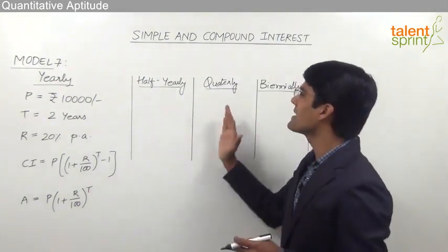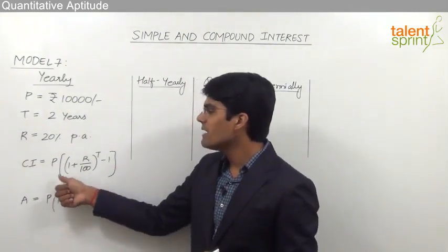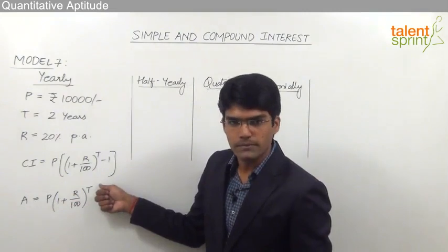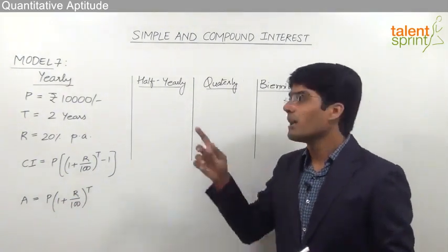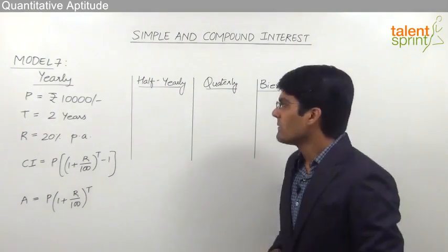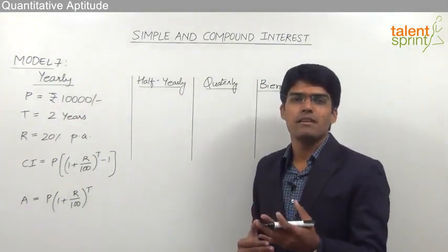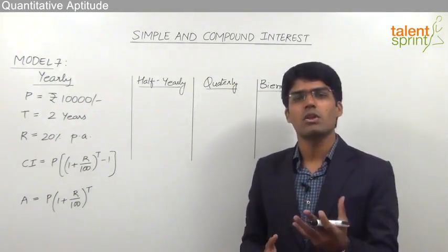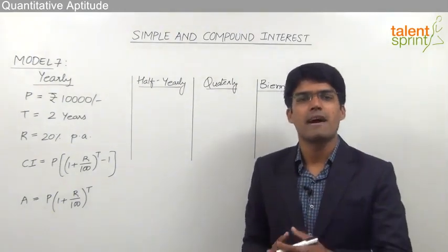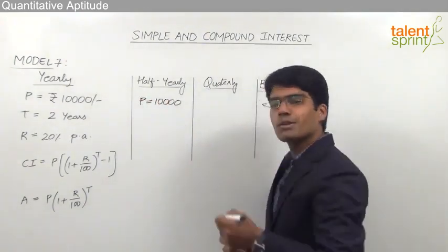Remember, whatever be the type of compounding — whether half yearly, quarterly, or biennial — the formula remains the same: CI = P(1 + R/100)^T − 1 and Amount = P(1 + R/100)^T. But the way we substitute the values will change. The principle is not going to get affected by the type of compounding because it is simply the amount borrowed, so it remains Rs. 10,000 even for half yearly compounding.